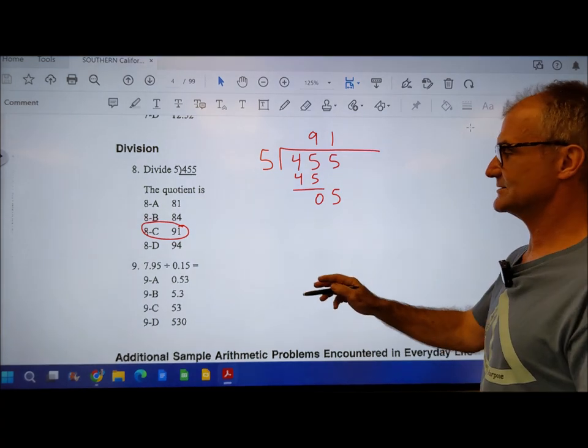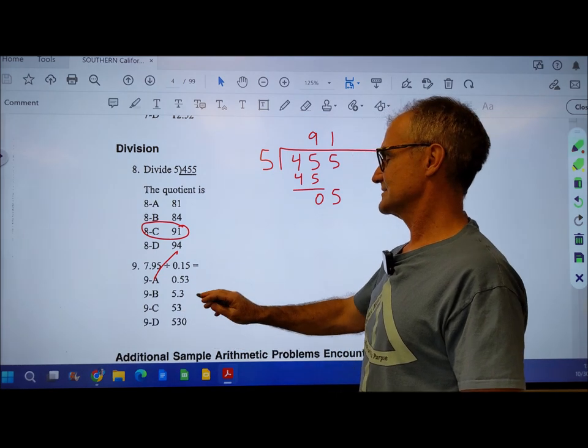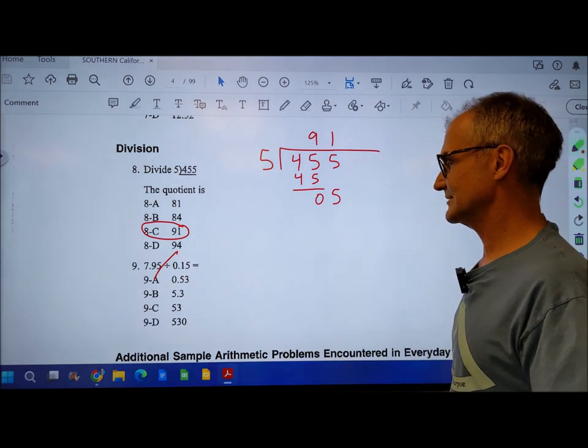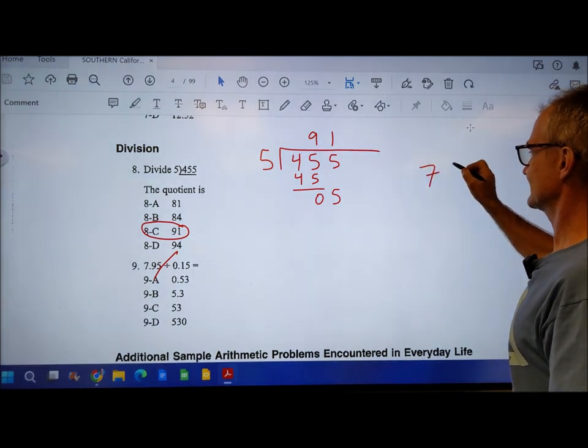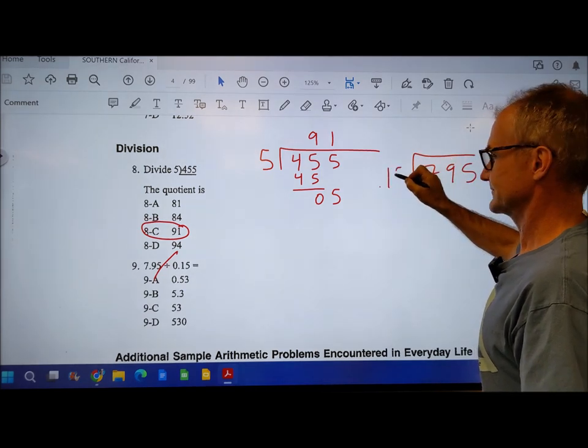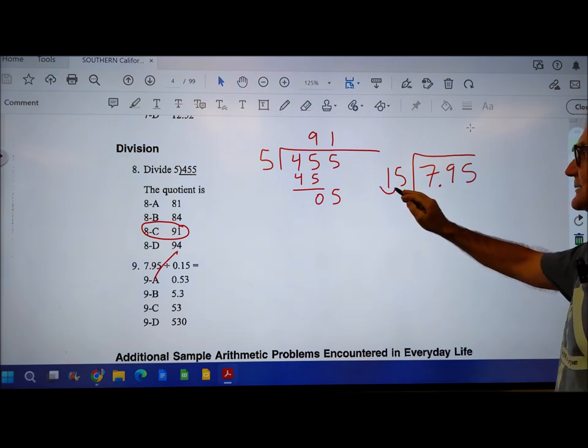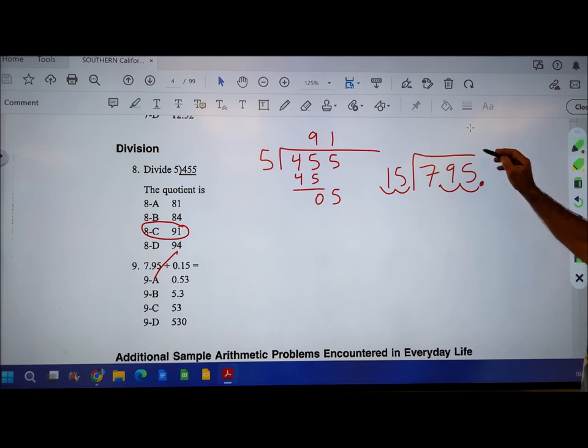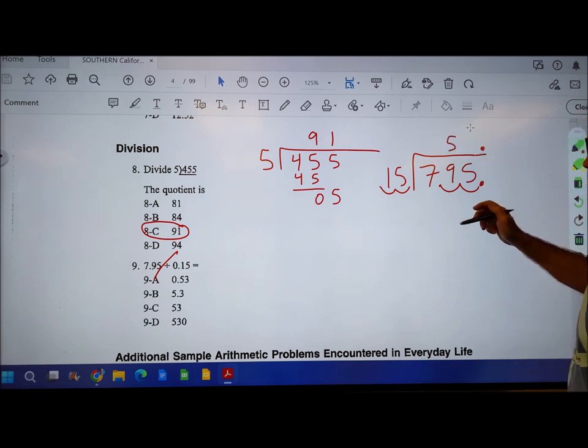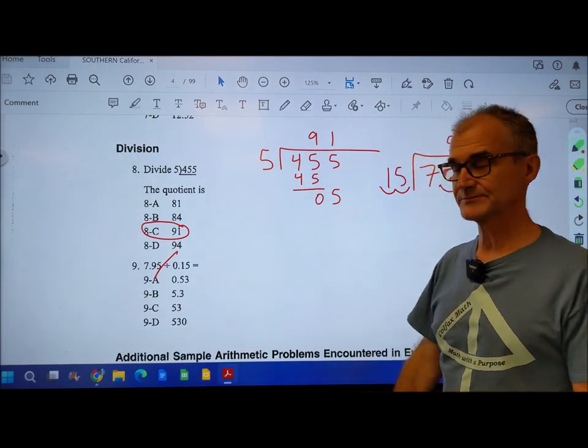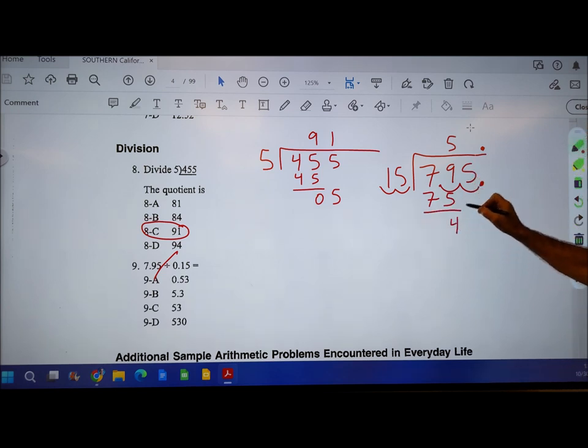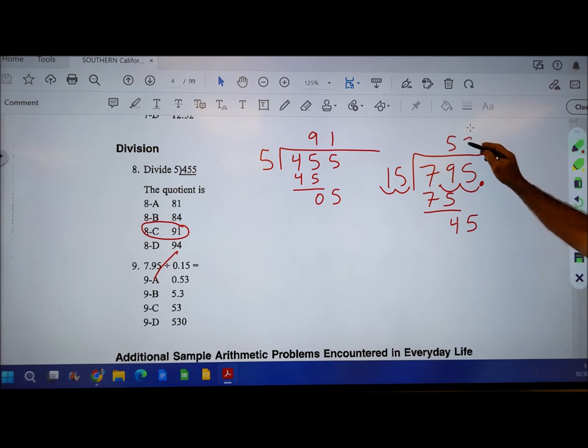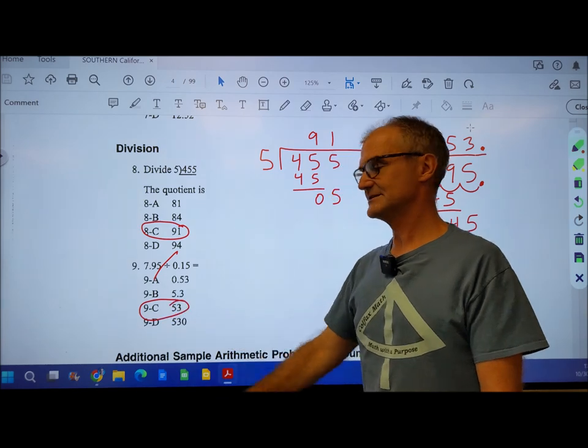Number 9 is a little different, you've got to set it up. It's saying 795 divided by 0.15, so it's going to be a really big number. I move the decimal over 1, 2 places here and 1, 2 places here. My decimal place goes straight up there. 15 goes into 79 five times. Now I know I'm going to have another place, I can see the correct answer is 53. 15 goes into 45 three times, and I have 53.0, answer 9C.